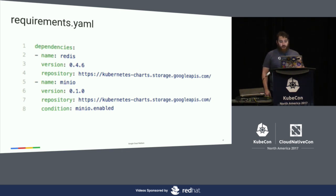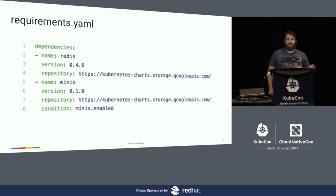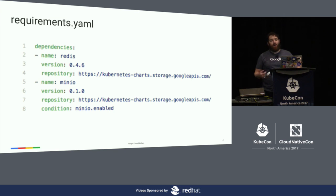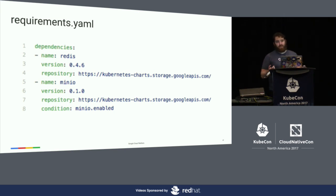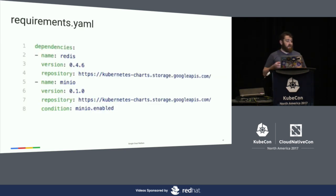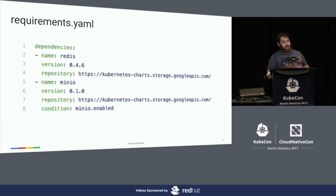Another thing in a chart is the requirements.yaml. This defines what other charts you may want to deploy alongside your chart — generally this is used for data stores like a Postgres dependency or a Redis dependency. The version here can also be a semver, so I can say give me anything in the 0.4.x series of the Redis chart and you'll update to those things.